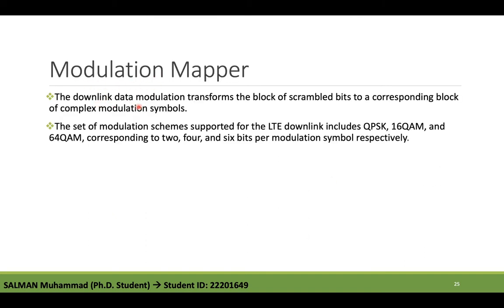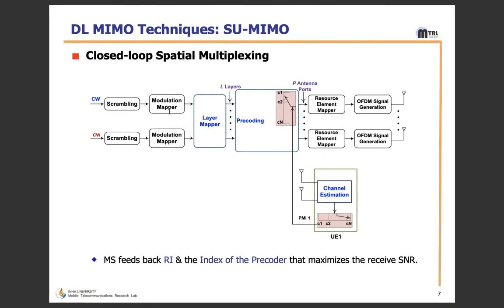The Modulation Mapper transforms the block of scrambled bits to a corresponding block of complex modulation symbols. The codeword from the scrambler is given to the modulation mapper. The set of modulation schemes supported for LTE downlink includes QPSK, 16-QAM, and 64-QAM.